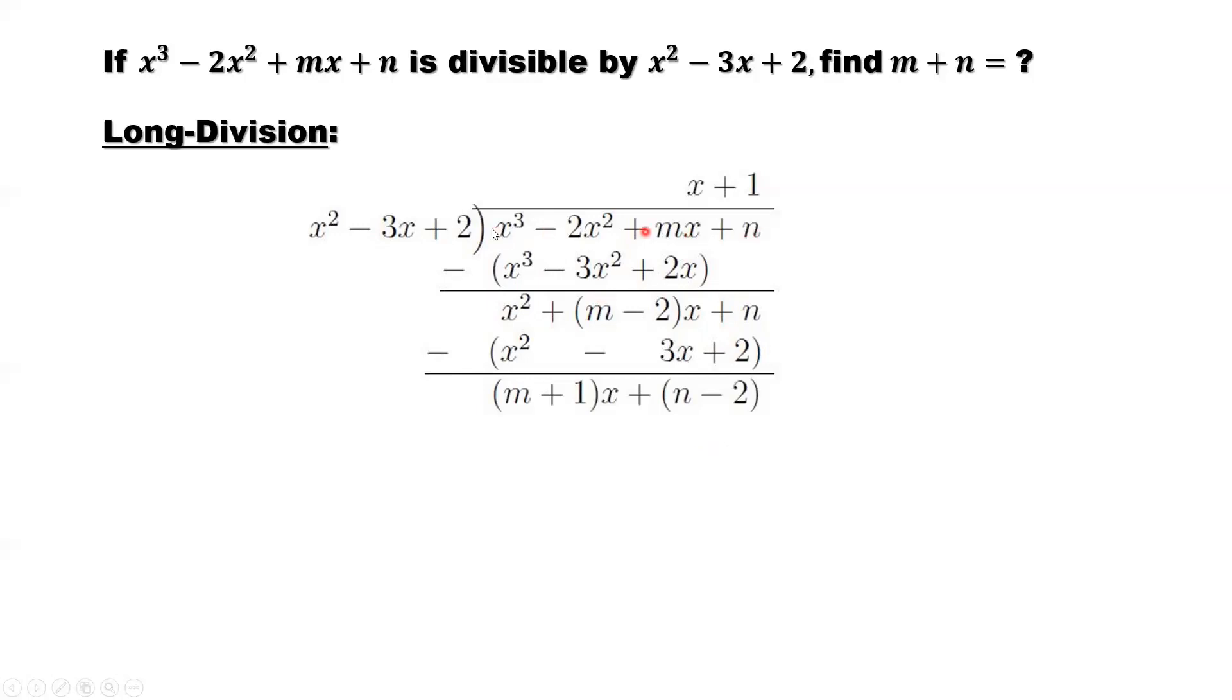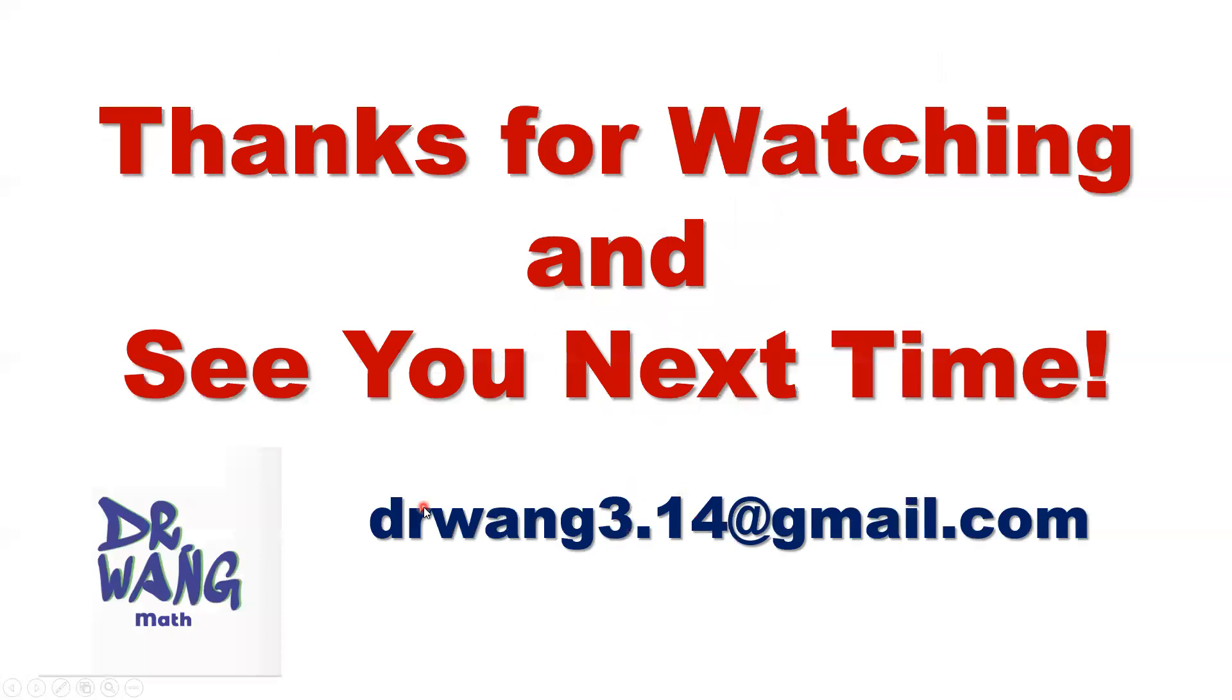Because this part is divisible by this, that means you don't have anything here. Here should be zero, otherwise you have remainder. This part also equal to zero. This imply this part equals zero, this part also equal to zero. We don't need this part, we have m plus one equal to zero. This imply m equals negative one. That's the answer. That's all, thanks for watching and see you next time.